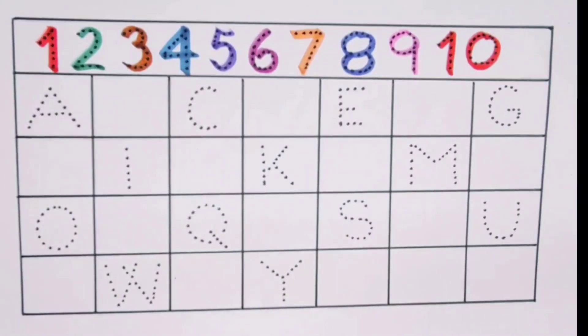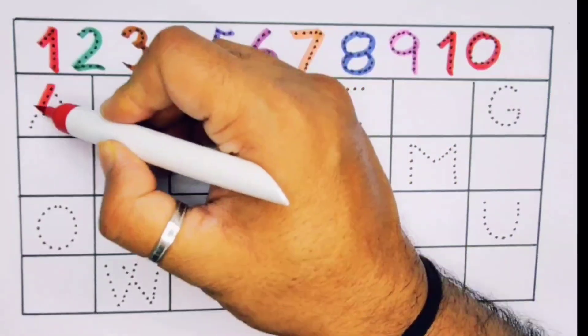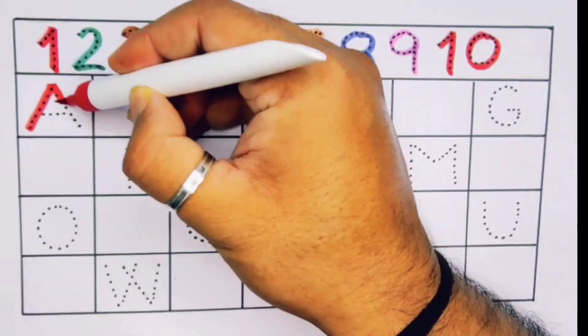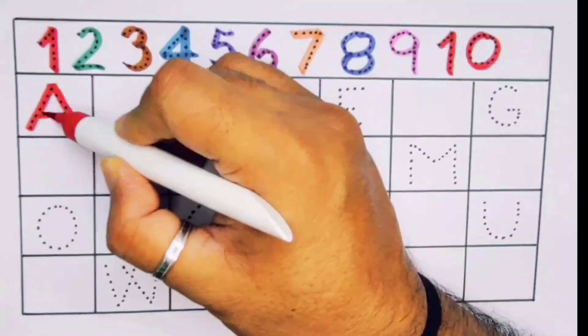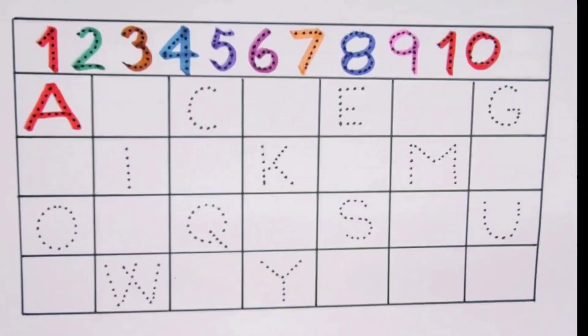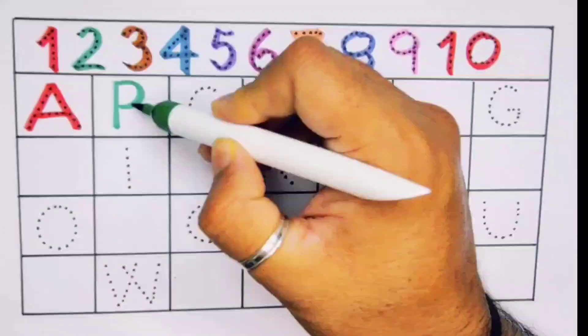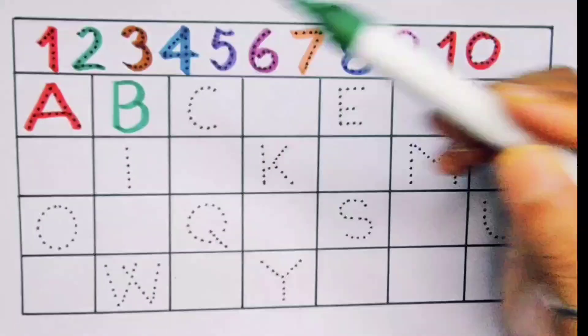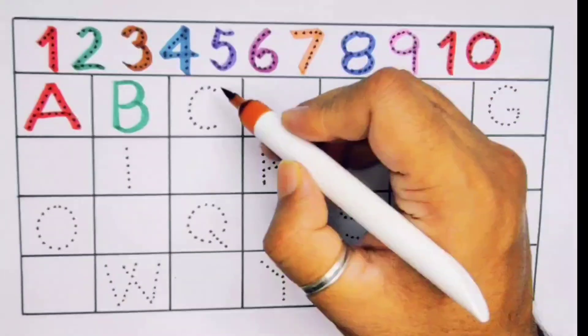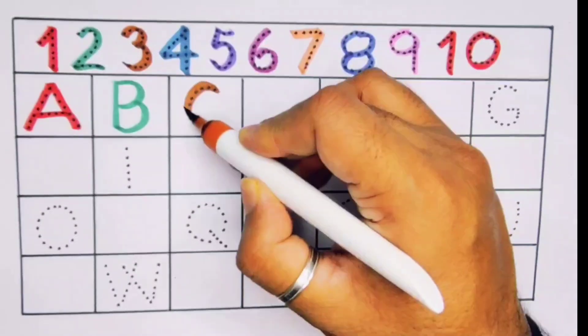A, A for aeroplane, A for aeroplane. Next kids, it's B, B for butterfly, B for butterfly. Next, C, C for car.